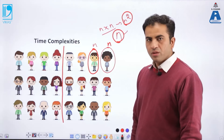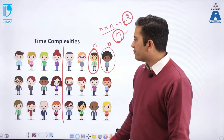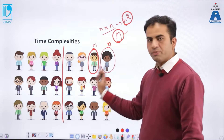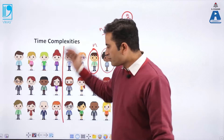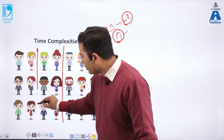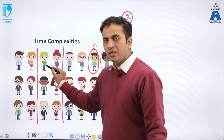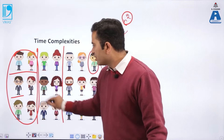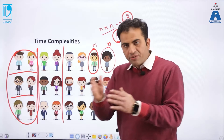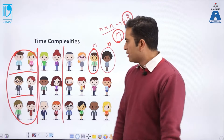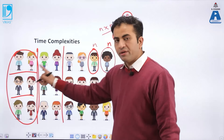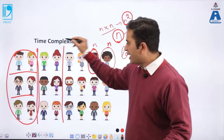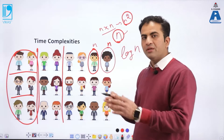The third approach is to split the group into two parts. I search one part and get a clue about which part has the pen, so I ignore the other part. Then I divide that part again into two, focus on the relevant half, and repeat. By dividing each time, my searching time becomes very less. This concept gives us a time complexity of O(log n).